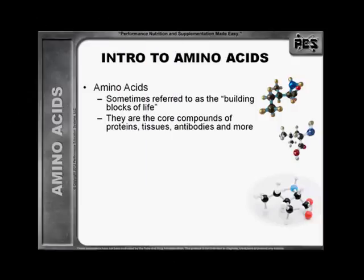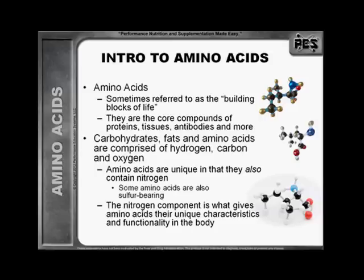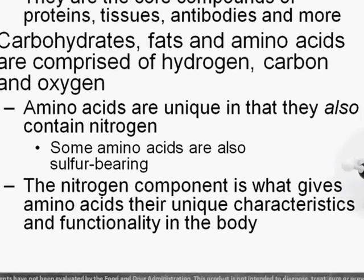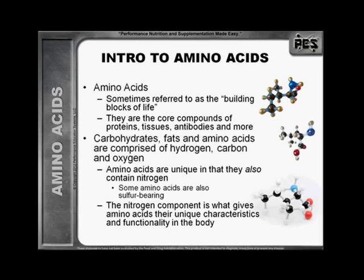Amino acids are sometimes referred to as the building blocks of life. They are the core compounds of proteins, tissues, antibodies, and more. Carbohydrates, fats, and amino acids are comprised of hydrogen, carbon, and oxygen. Amino acids are unique in that they also contain nitrogen. However, some amino acids are also sulfur-bearing. The nitrogen component is what gives amino acids their unique characteristics and functionality in the body.